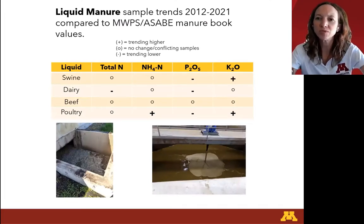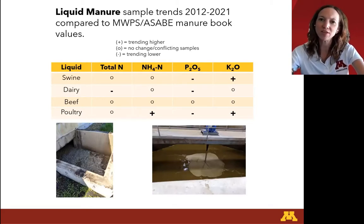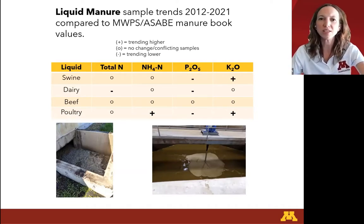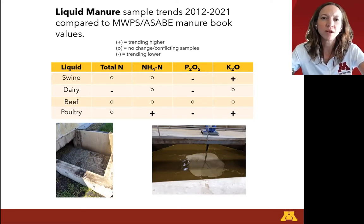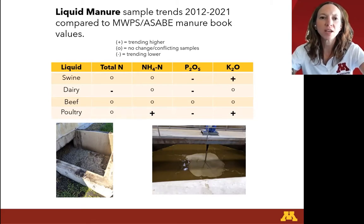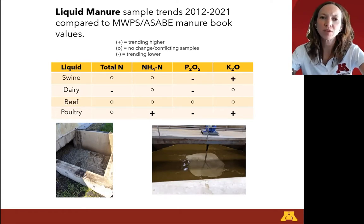Looking at some general trends for liquid manure across the five labs compared to the published standards: for swine, we couldn't identify much of a trend on the nitrogen side, but phosphorus seemed to be decreasing and potassium increasing. On the dairy side, total nitrogen and phosphorus were trending a little lower. For beef, we couldn't really identify a trend. But for poultry, ammonium was trending higher, potassium was increasing, and phosphorus was trending lower. We'll look at a few highlighted examples in the next slides.